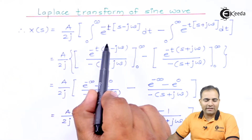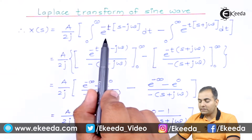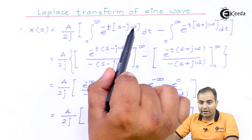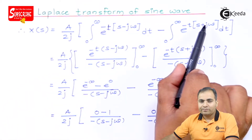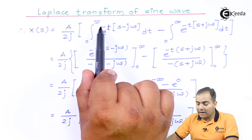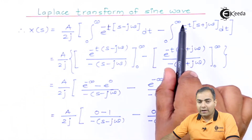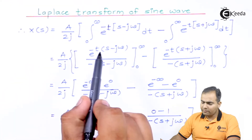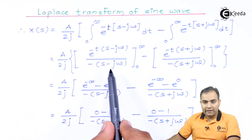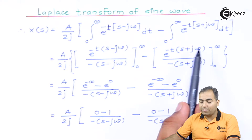Since the bases are the same, powers get added. Taking −t as common from the exponents: the first integral has e^(−(s−jω)t) and the second has e^(−(s+jω)t). Integrating both with respect to t, the coefficient of t moves to the denominator. The result is: e^(−(s−jω)t) / (−(s−jω)) and −e^(−(s+jω)t) / (−(s+jω)), keeping the minus sign in the denominator.